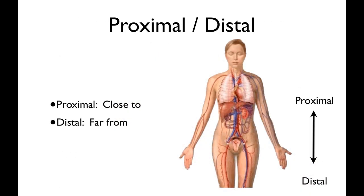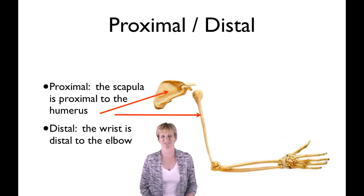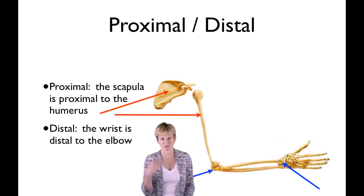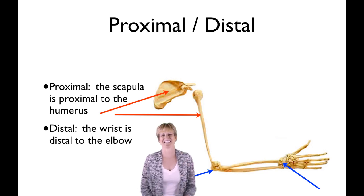Proximal and distal — you're probably familiar with the roots of these words. Proximal means close to and distal means far from, and we're always talking about the trunk of the body unless otherwise indicated. For example, the scapula is proximal to the humerus — the shoulder blade is closer to the trunk of the body than the humerus. The carpals, or wrist bones, are distal to the elbow, meaning they are farther from the trunk of the body than the elbow. We use proximal and distal quite a bit.